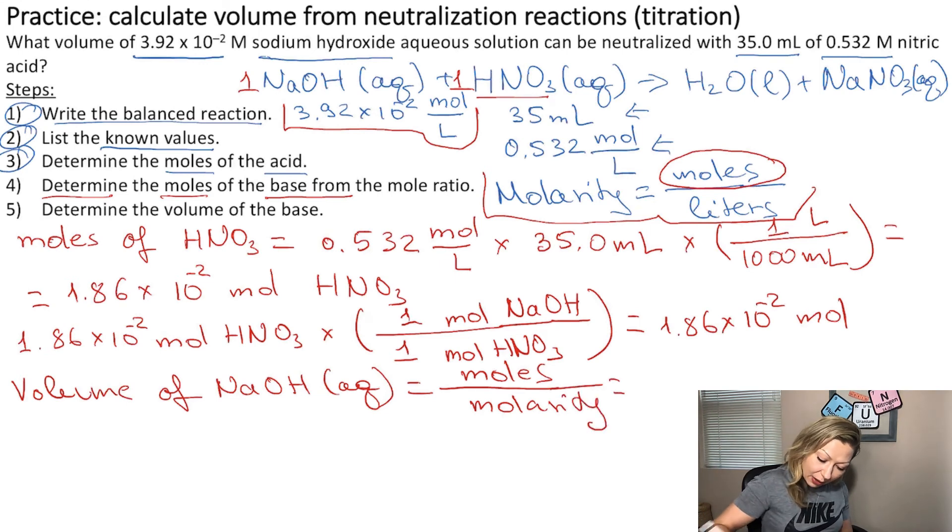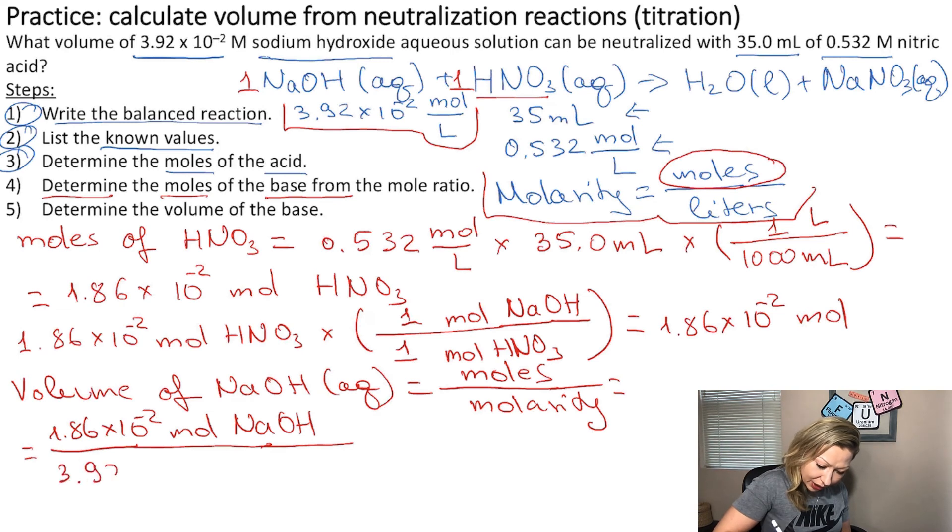Now let's plug the numbers in. We have 1.86 times 10 to the negative second moles of NaOH, and the molarity is 3.92 times 10 to the negative second mole per liter. Now if you do this calculation, you are going to get 0.475 liters.